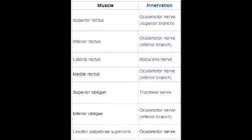The mnemonic to help you remember the extraocular muscles and nerves: cranial nerve 6 innervates the lateral rectus, cranial nerve 4 innervates the superior oblique, and cranial nerve 3 innervates the rest. So the formula becomes LR6SO4R3.